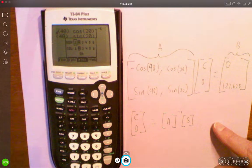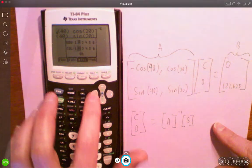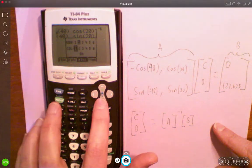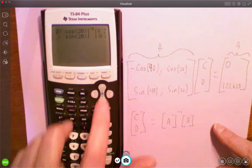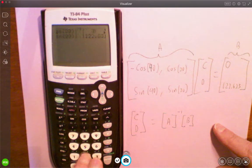We still need two rows, but just one column. So two is fine. So two, enter, and then one column, and then okay. And then you can go 0 and 122.625.